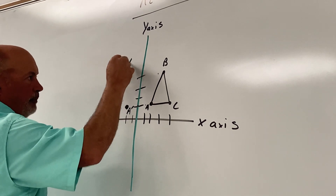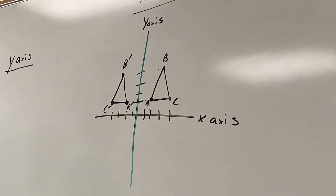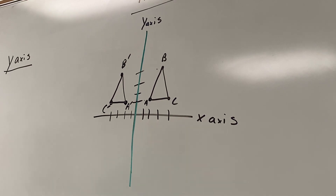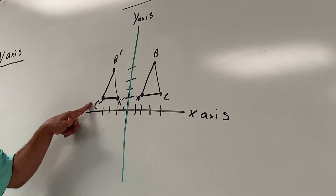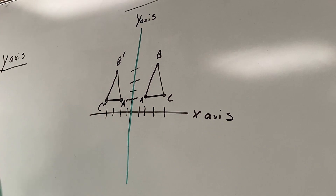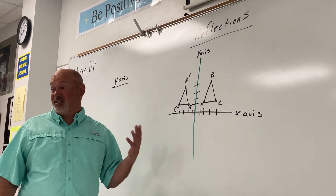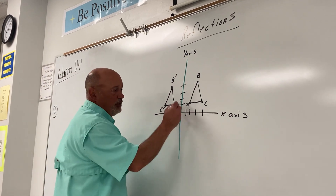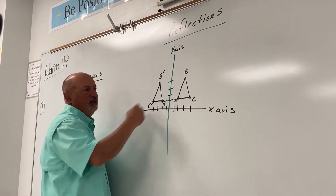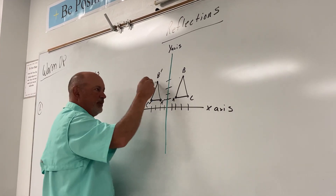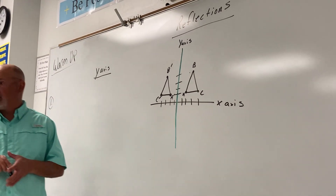And now we have correctly reflected this triangle over the y-axis. C was on the right — where is C prime? On the left. Just like a mirror: what's on the right becomes on the left, what's on the left becomes on the right. That's really all you have to do — count to the axis. If it's two to the right, go two to the left. If it's four to the right, go four to the left. Draw your new triangle, label A prime, B prime, C prime. Done.